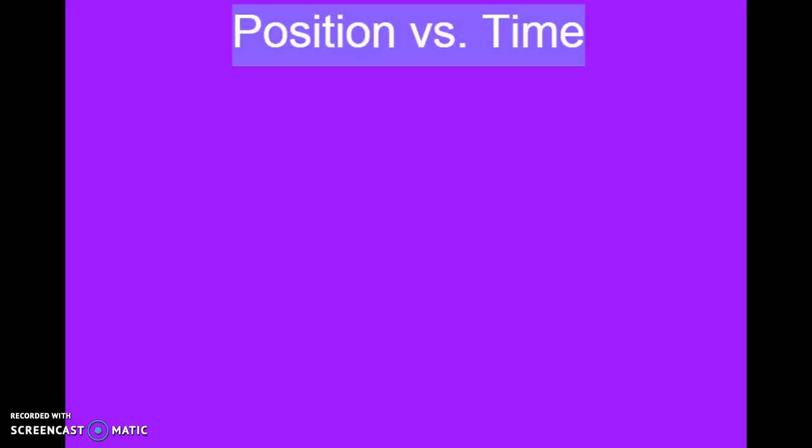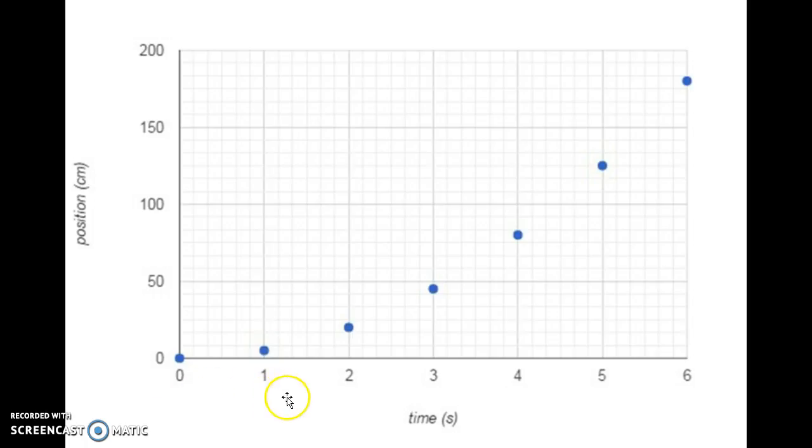A position versus time graph. An object that moves for six seconds from zero to 180 centimeters, increasing its speed.